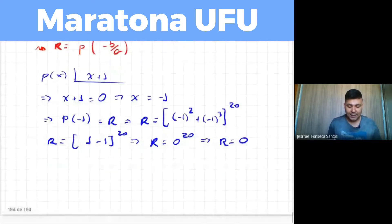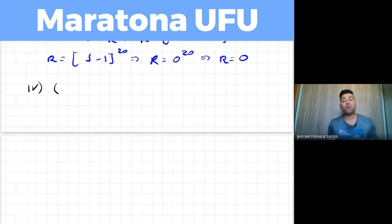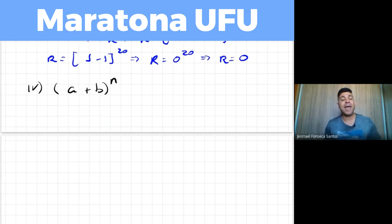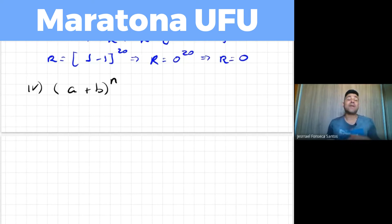O aluno precisaria lembrar do termo geral do Binômio de Newton. O binômio de Newton é (A + B)^N — uma potência de uma soma de dois termos. Cada pedacinho do desenvolvimento se chama termo. Por exemplo, (x + 2)² tem três termos: quadrado do primeiro, mais duas vezes o primeiro vezes o segundo, mais quadrado do segundo. O termo geral é uma fórmula que encontra qualquer um desses termos sem precisar desenvolver a potência inteira.